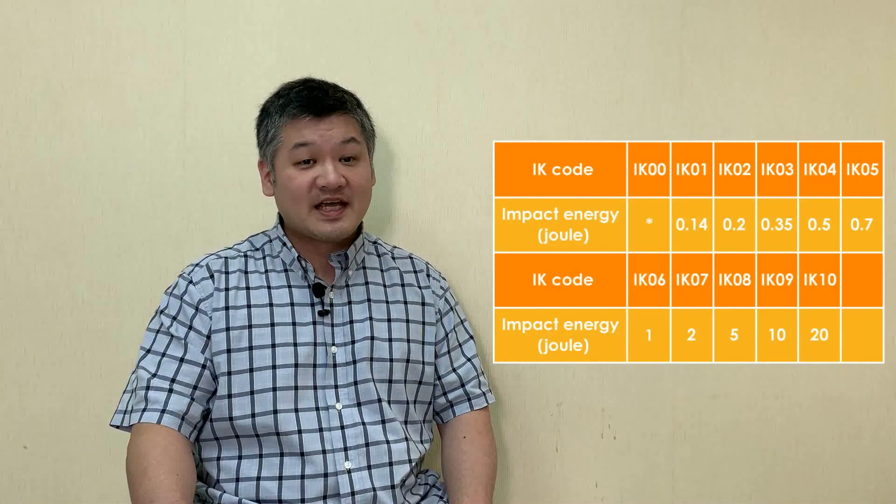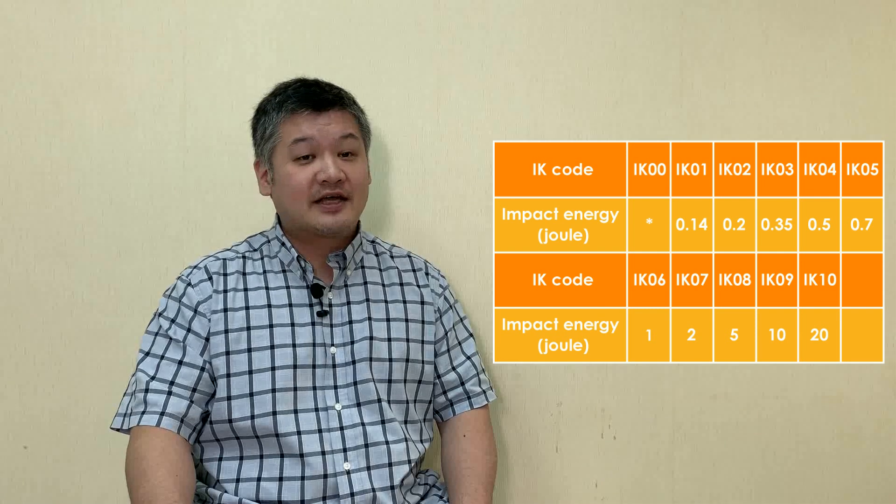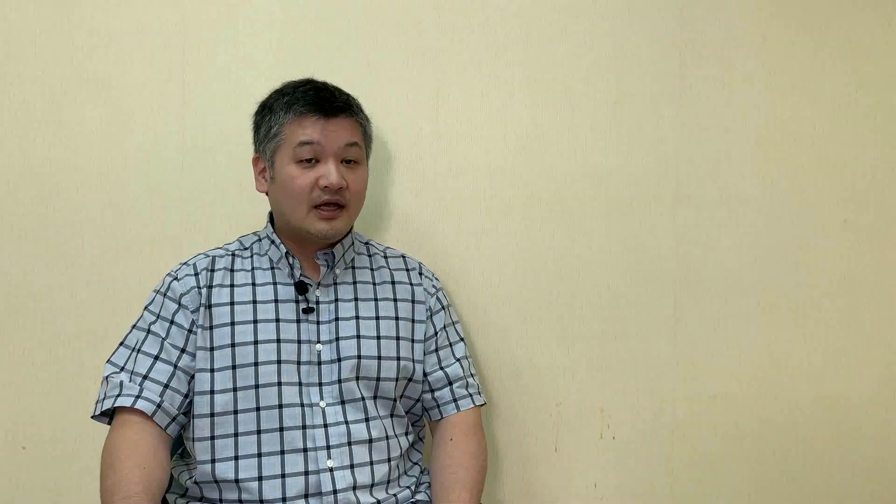Normally the IK code of EN62262 is used to rate the mechanical impact resistance of equipment. There are a total of 10 IK levels from IK00 to IK10. AMT's industrial touch display uses a 1.8 millimeter thick glass panel that's thermally strengthened with good impact resistance that can pass IK8 testing standards.